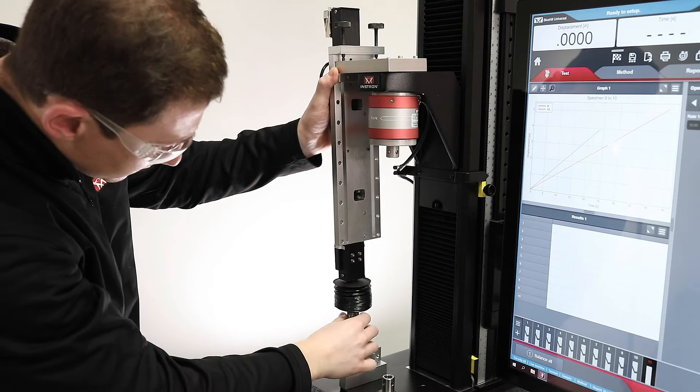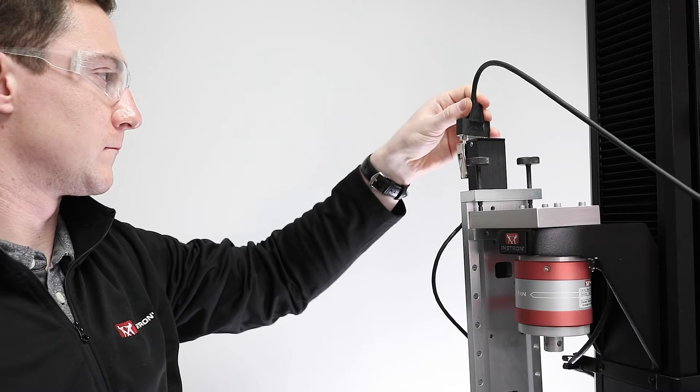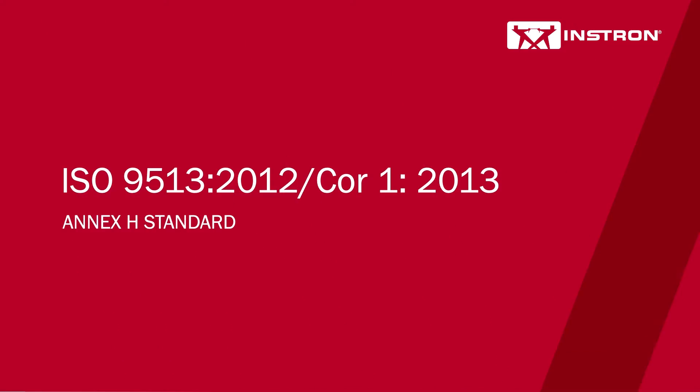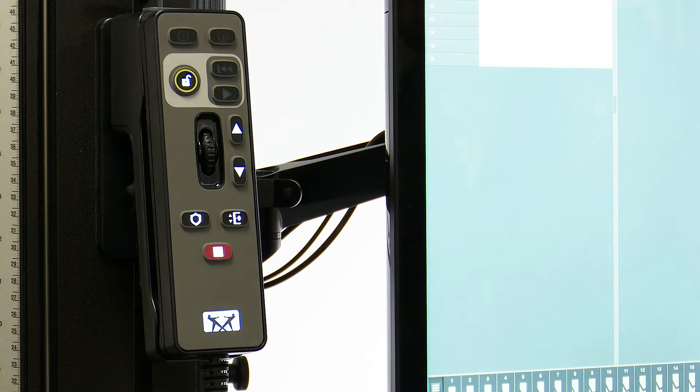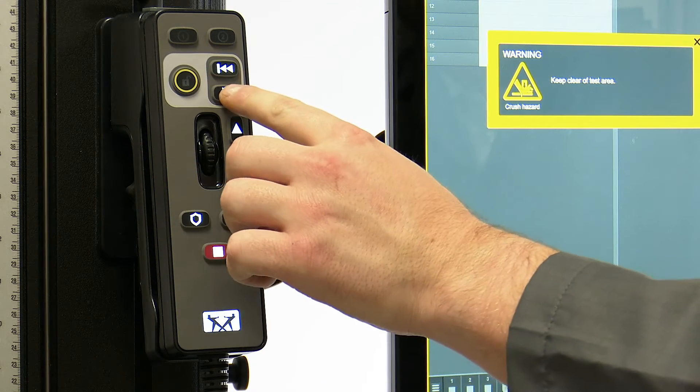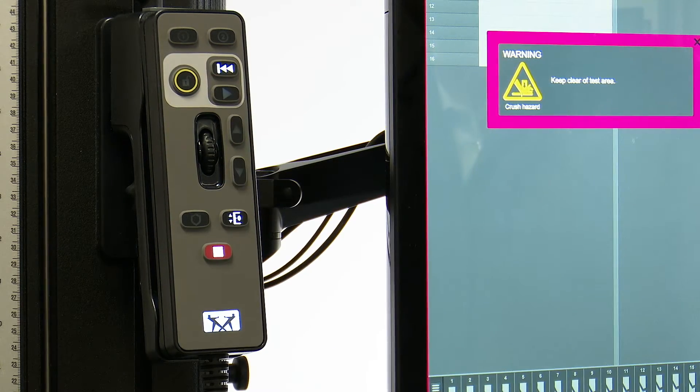For displacement verification we can verify to ASTM E2309 or ISO 9513 2012-Core 1-2013 Annex H standards, and for speed verification we can verify to ASTM E2658 standard.